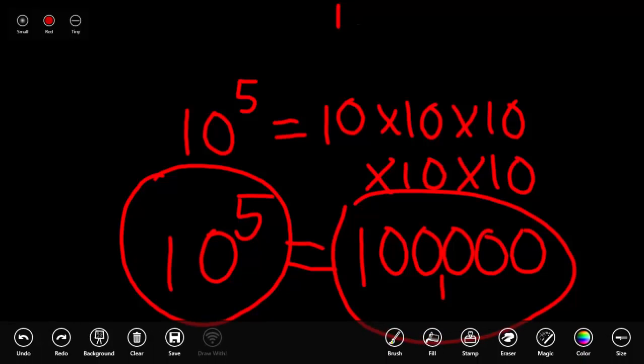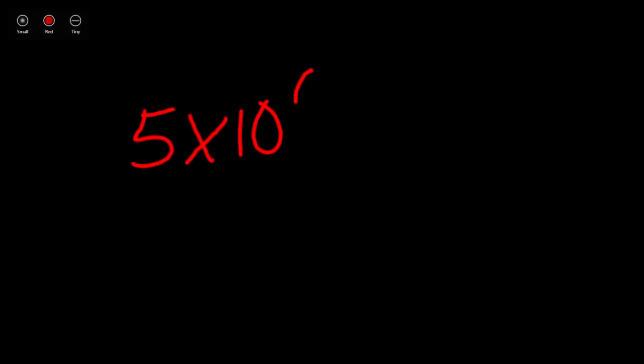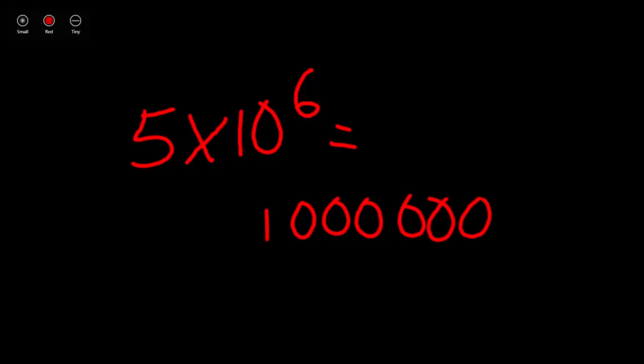You will often see numbers to the power of 10 written in exponential form with another number involved as well. This is called scientific notation. For example, you may see 5 times 10 to the power of 6. We know that 10 to the power of 6 would equal a 1 with 6 zeros, or 1,000,000. Now we're multiplying that 1,000,000 by 5.